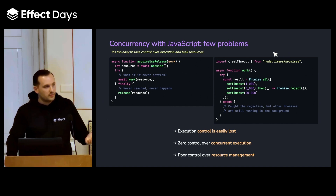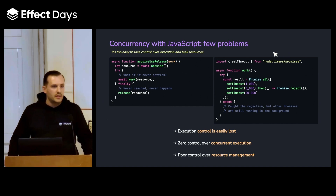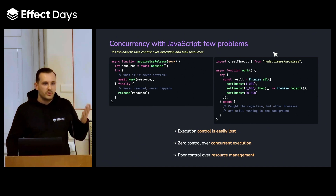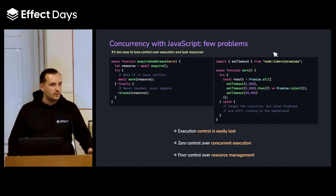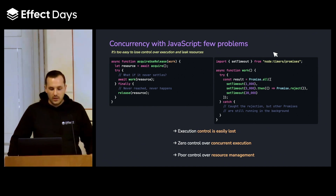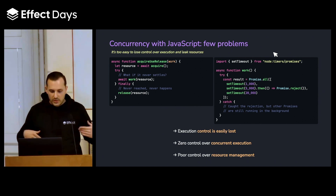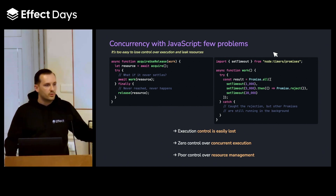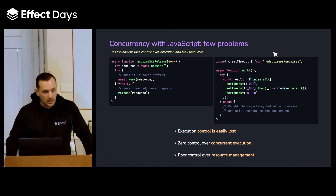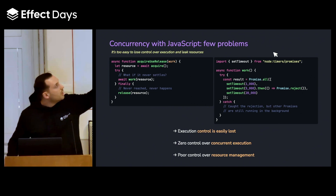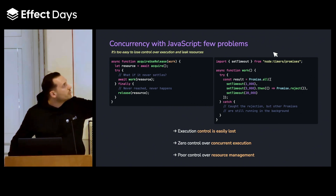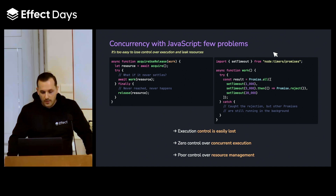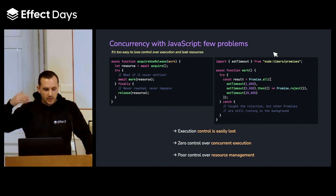The other issue — perhaps the most important one — is that whenever some of those promises fail, the other ones keep running in the background. Control flow is provided back, but we still keep in memory a lot of promises and all the resources associated with them. For example, up until the point where we reach the five-second timer, a setTimeout of 20 seconds will keep running in the background.